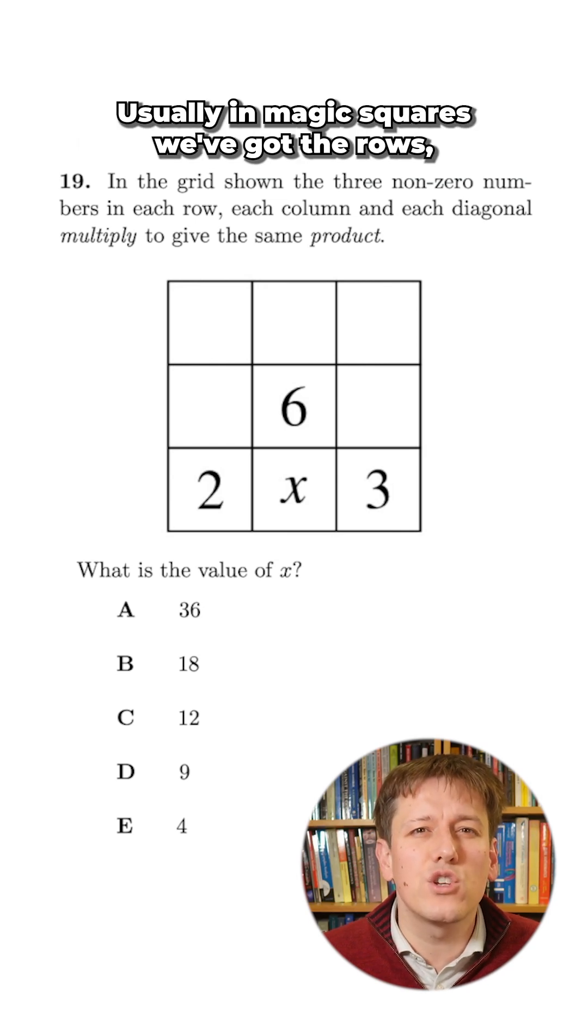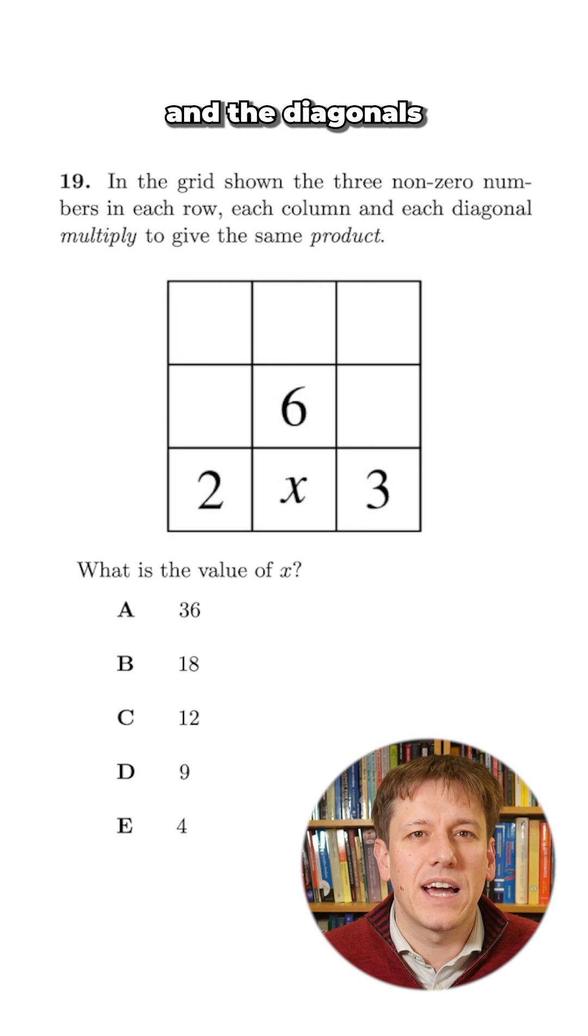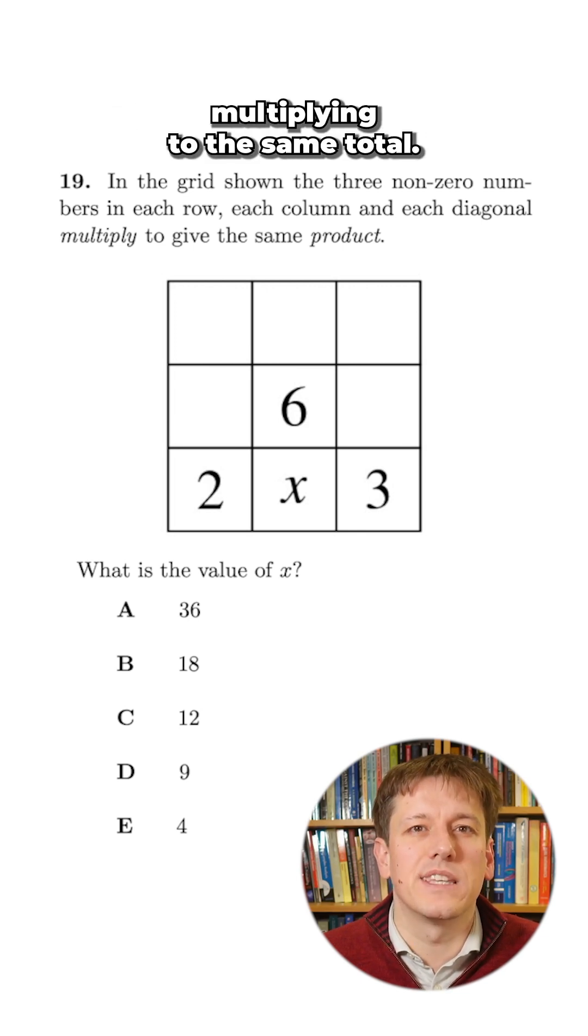This is an unusual type of magic square. Usually in magic squares we've got the rows, the columns, and the diagonals adding to the same total. Here we've got them multiplying to the same total.